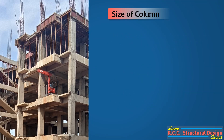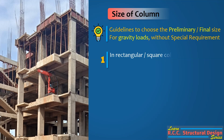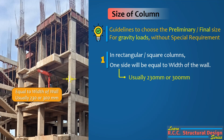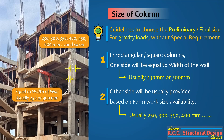In general, the following guidelines can be used to choose the preliminary or final size of a column for gravity load without special requirements. First, in rectangular or square columns, one side will usually be equal to the width of the wall, which is commonly 230mm or 300mm. Second, the other side will be provided based on formwork size availability, which is generally 230mm, 300mm, 350mm, 400mm, and so on — an increment of 50mm or 2 inches in size. At some localities, it may be 3 inches or other increments.